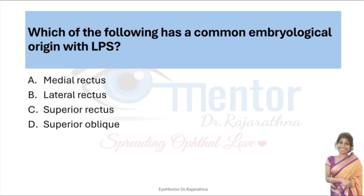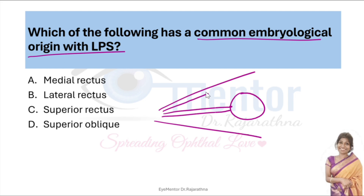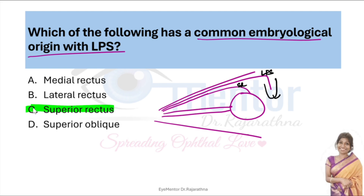Which of the following has a common embryological origin with levator palpebrae superioris? The superior rectus and the LPS have a common embryological origin. The LPS goes into the upper lid while the superior rectus attaches to the sclera. That is why in certain clinical conditions both are involved. The answer is superior rectus.